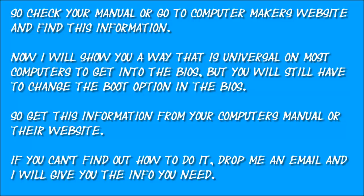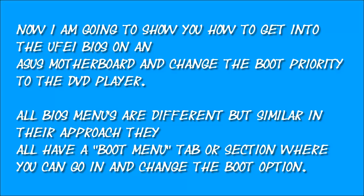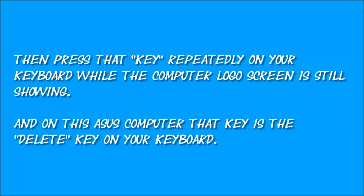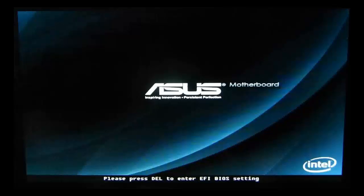If you can't find how to do it, drop me an email and I will give you the information you need. I'm going to show you how to get into the UEFI BIOS on an ASUS motherboard and change the boot priority to DVD player. All BIOS menus are different but similar in approach — they all have a boot menu tab where you can change the boot option. Turn on your computer; when you see the computer logo screen it will tell you what key to press to get into BIOS settings. On this ASUS computer that key is the Delete key — press it repeatedly while the logo screen is showing and the BIOS settings screen will appear.